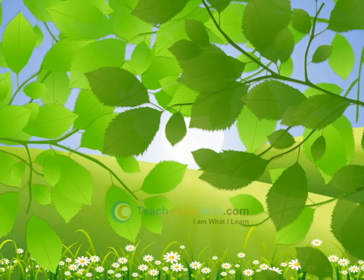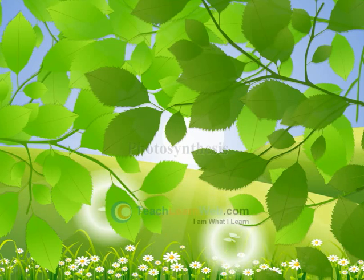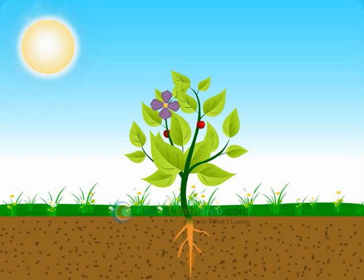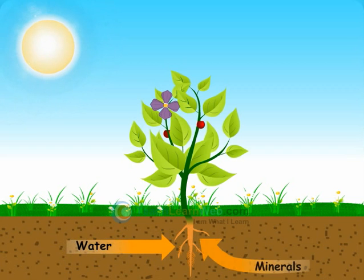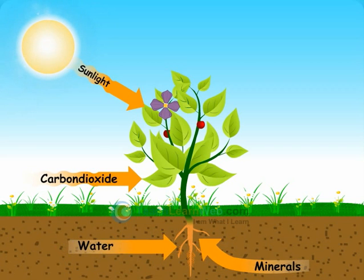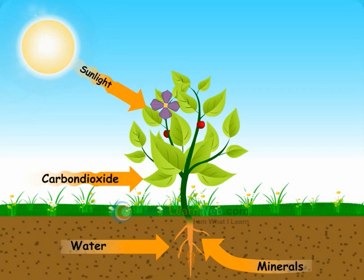An autotrophic mode of nutrition. Example: Photosynthesis. Photosynthesis is a process by which a plant uses raw materials like water, minerals, and carbon dioxide in the presence of sunlight to synthesize food.